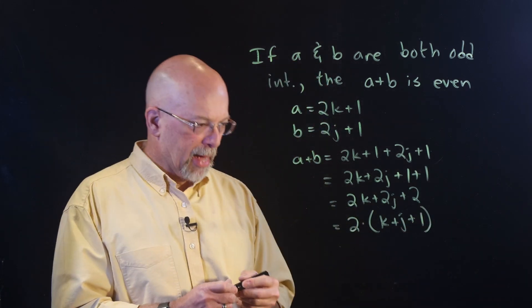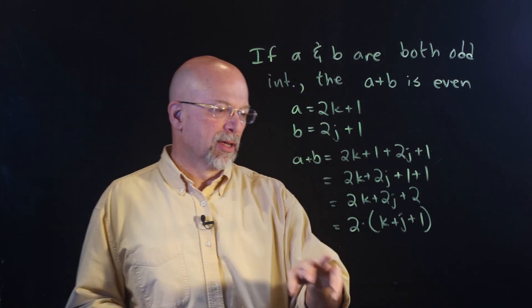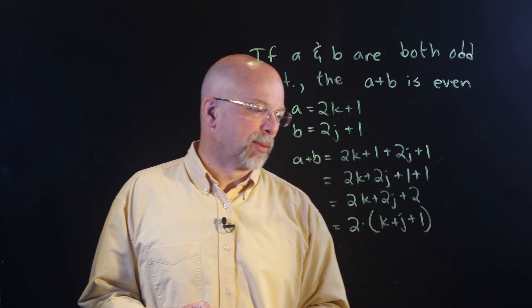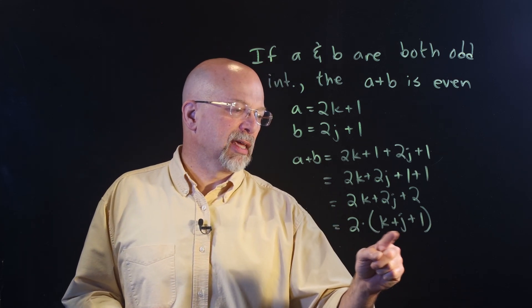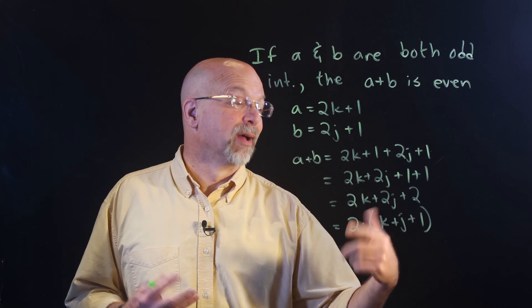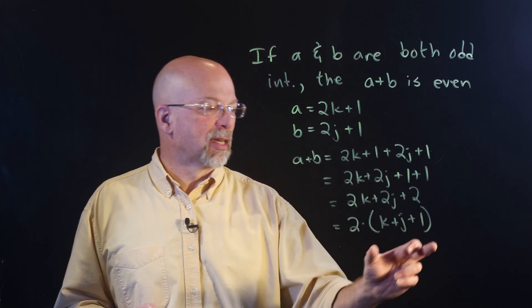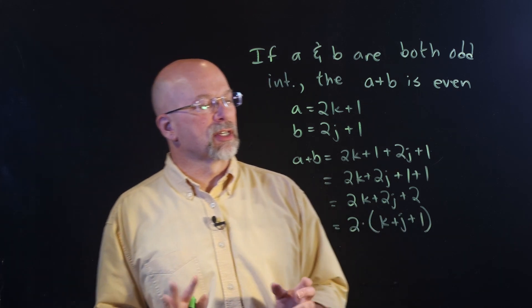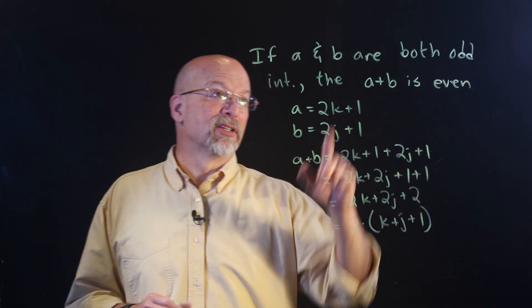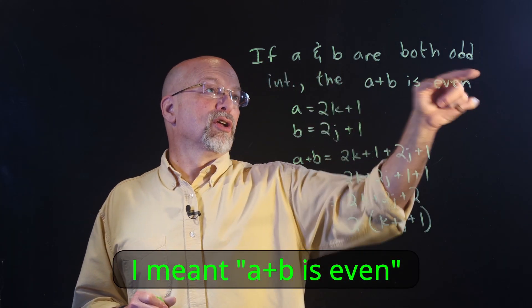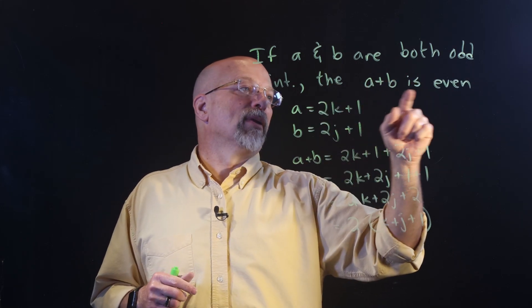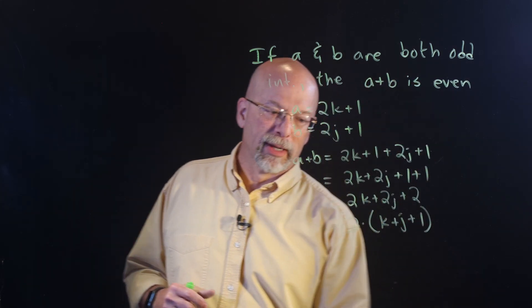We can pull a 2 out and get A plus B equals 2 times (K plus J plus 1). Any integer plus another integer is still an integer, plus 1 is still an integer. So everything inside the parentheses is an integer, times 2 means A plus B is even. So P: A and B are both odd. Q: A plus B is even. We've proven it.